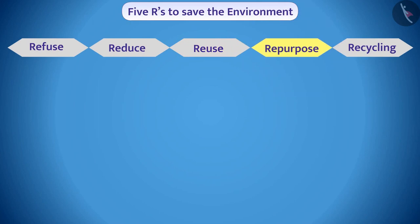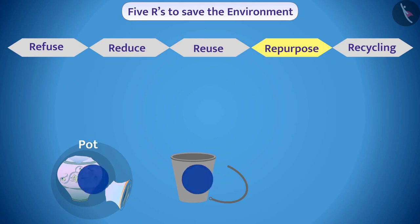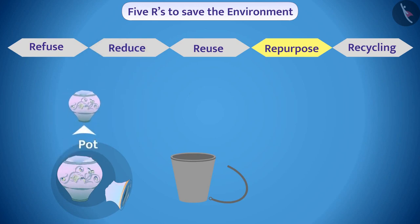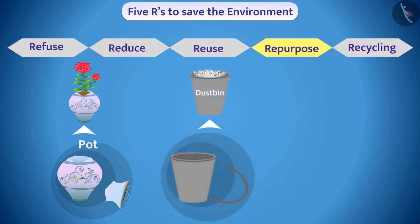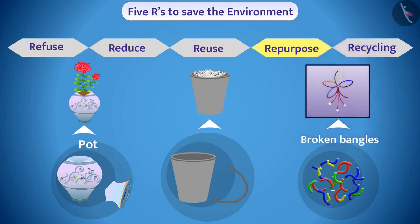Clothes which do not fit us can be given to the needy. The fourth R is Repurpose. Sometimes things purchased for one purpose no longer remain useful for that purpose. Such items can be used for other useful work. For example, a tree can be planted in a broken pot, a broken bucket can be used as a dustbin, and broken bangles can be used to make decorative items.